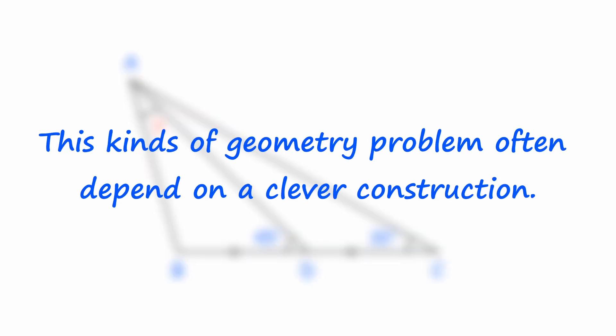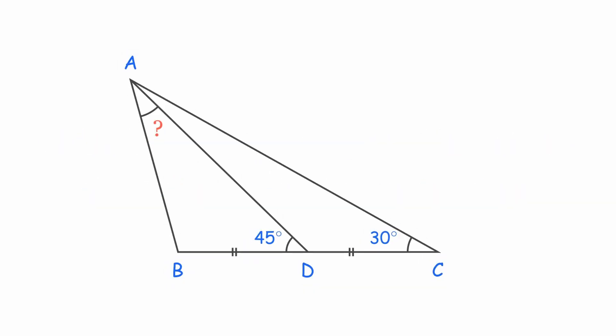Now here's the trick. These kinds of geometry problems often depend on a clever construction. Since D bisects BC, we know that BD equals CD. That suggests we try creating an isosceles triangle using these equal lengths.